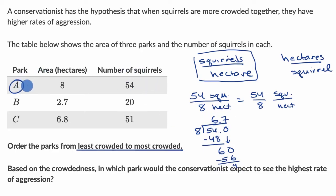Park A is approximately 6.7 squirrels per hectare.